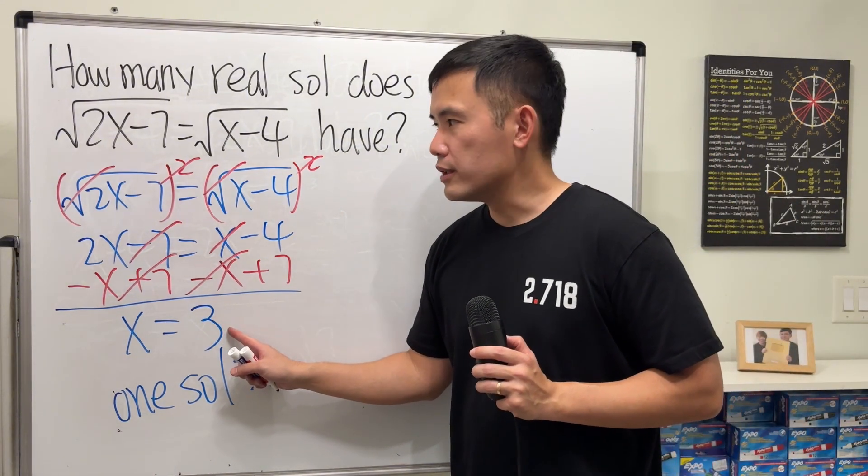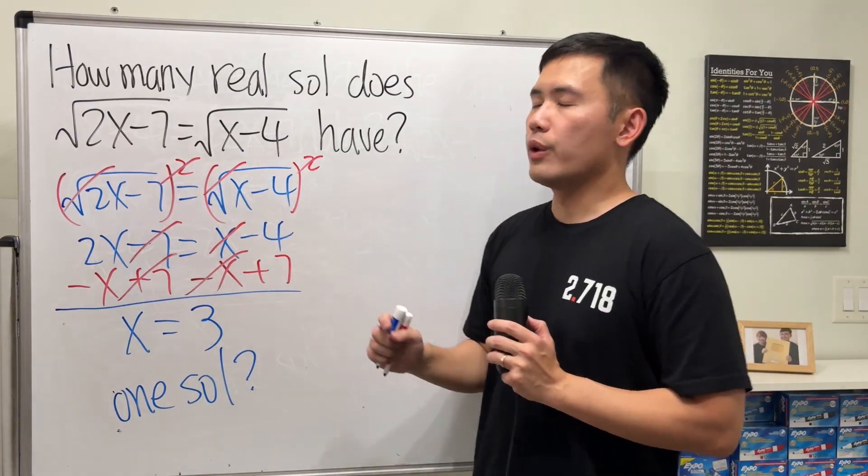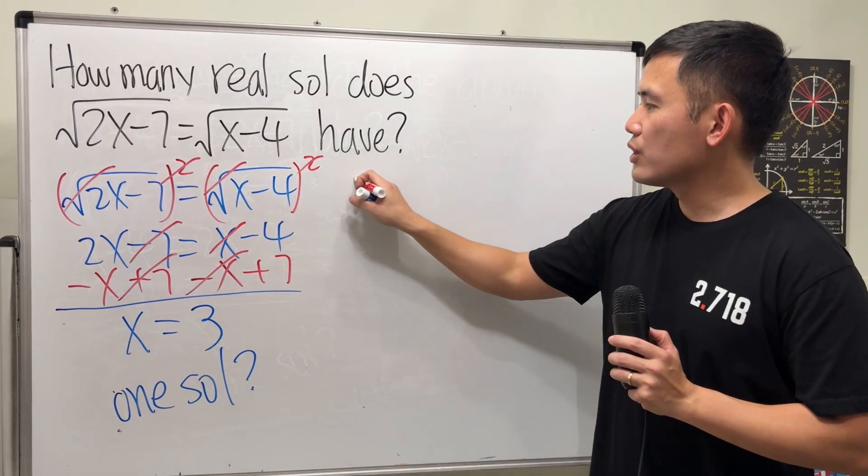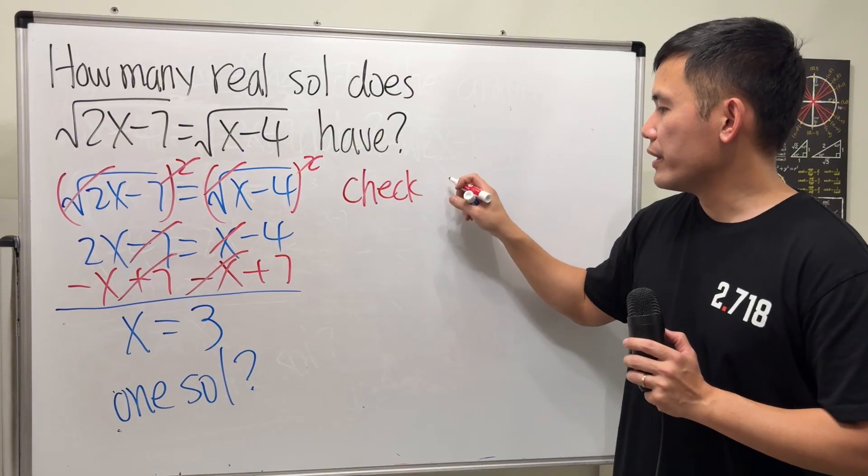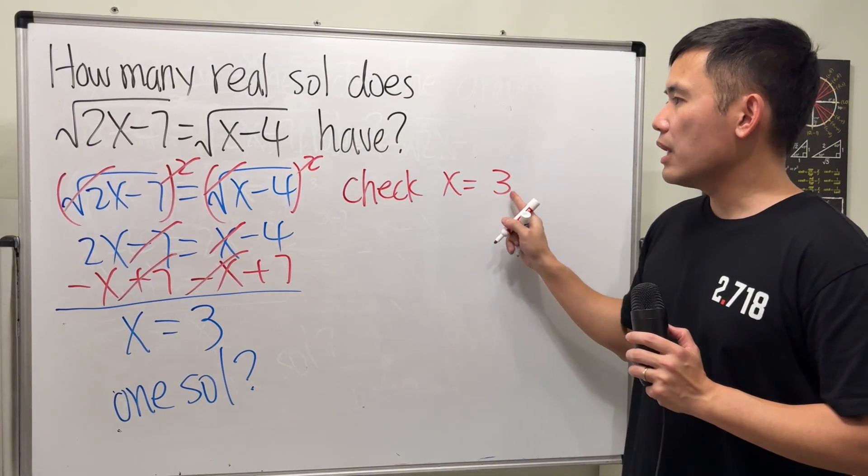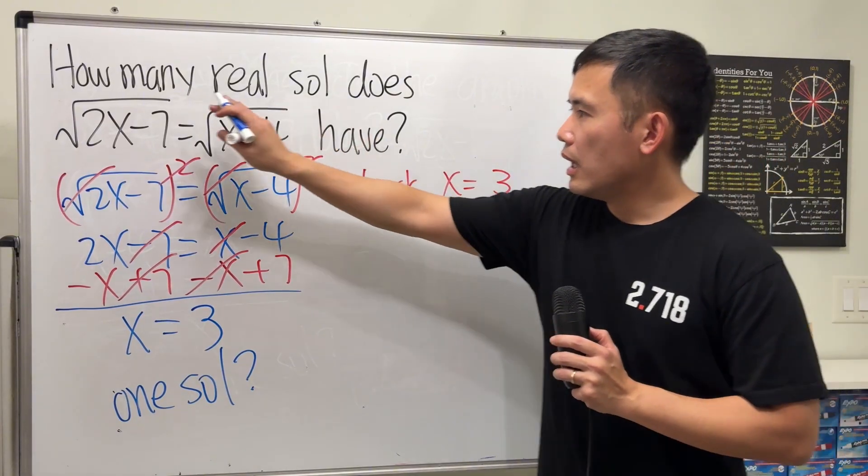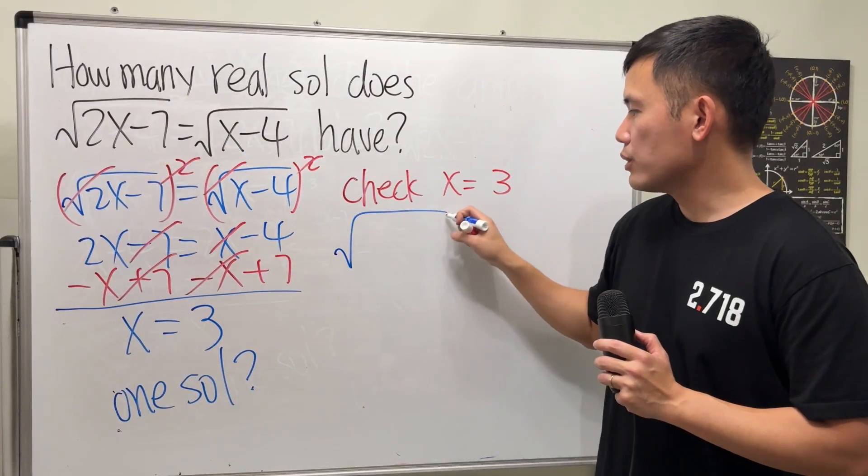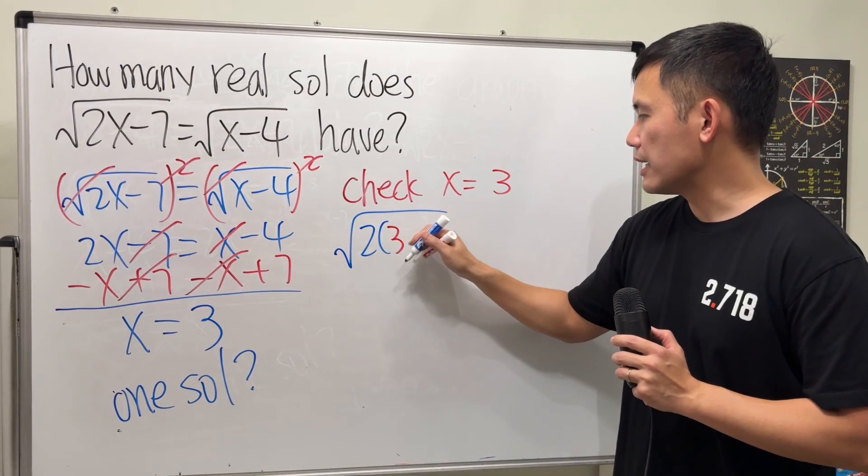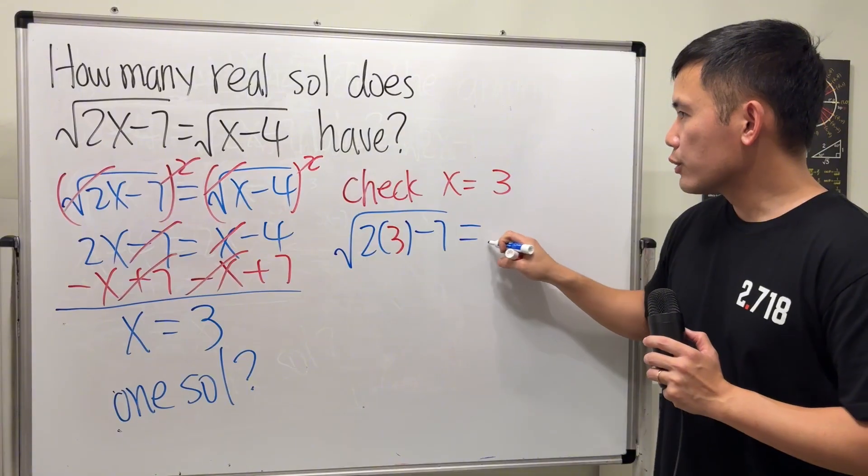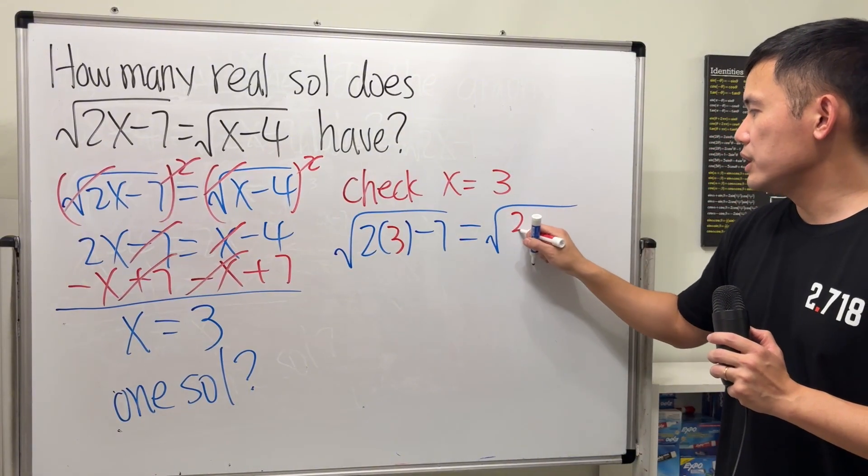But here is my concern. If we plug in 3 into the original equation, will that really work? Let's check when x is equal to 3. Plug it into the original. On the left-hand side, we are looking at square root of 2 times 3 minus 7. And on the right-hand side, we are looking at square root of 3 minus 4.